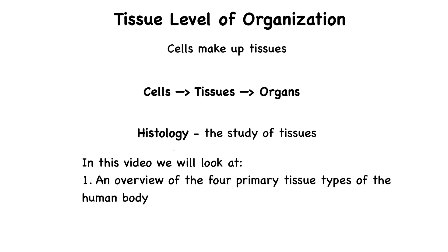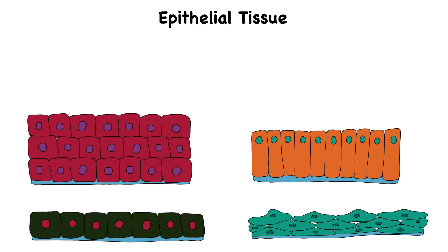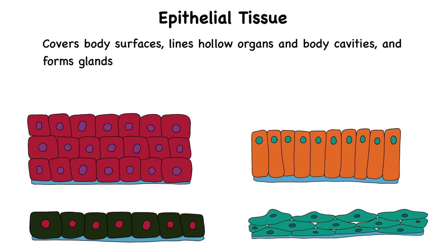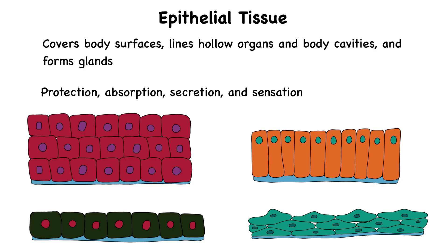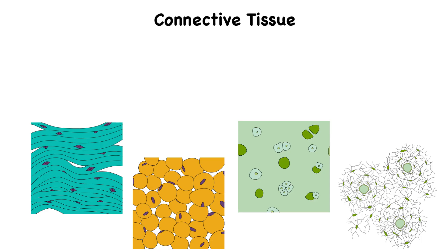The tissues of the body are divided into four major types. The first type is epithelial tissue. Epithelial tissue covers body surfaces, lines hollow organs and body cavities, and forms glands. It plays a role in protection, absorption, secretion, and sensation. The cells in epithelial tissue are tightly packed with minimal extracellular space between them, forming a strong barrier that controls what enters and leaves the body or an organ.